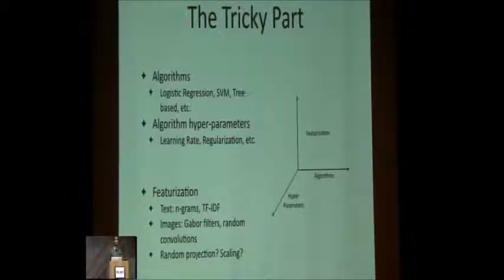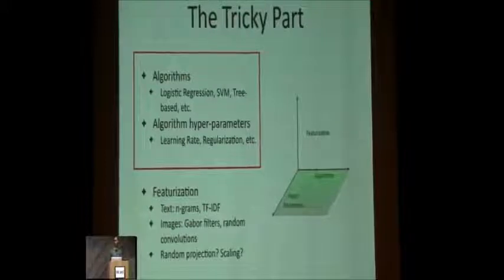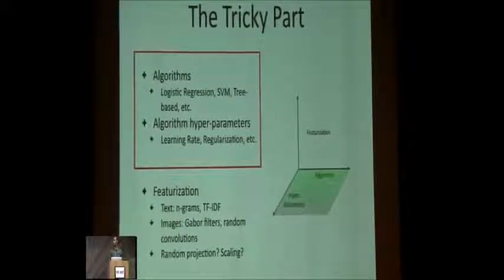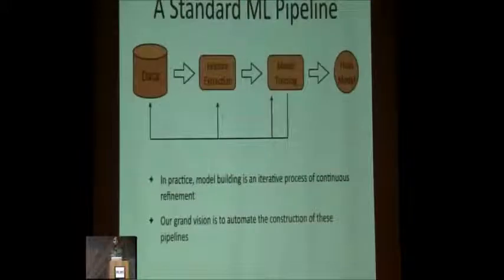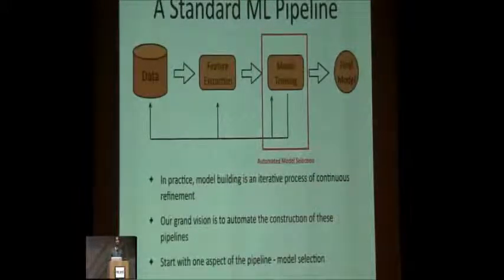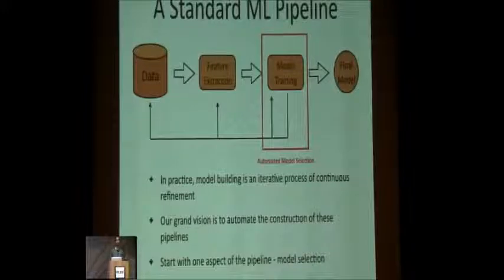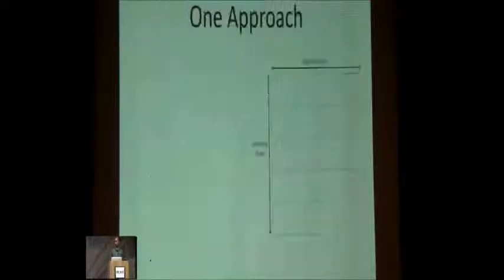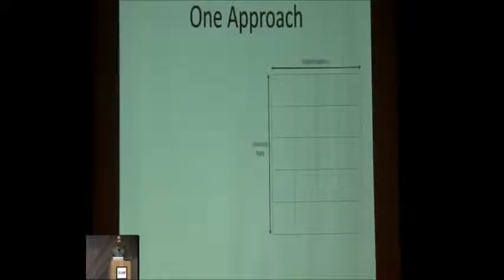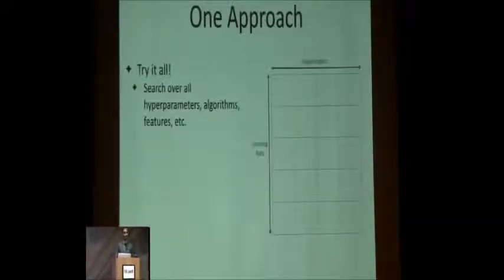In this work, to make some initial progress, we're focusing on just the algorithm component. Going back to this standard pipeline, the problem I'm presenting results on today is automated model search. We're assuming fixed features — how do we automate the process of selecting a model? The natural approach, and what people typically do in practice, is grid search. It's pretty simple to do.